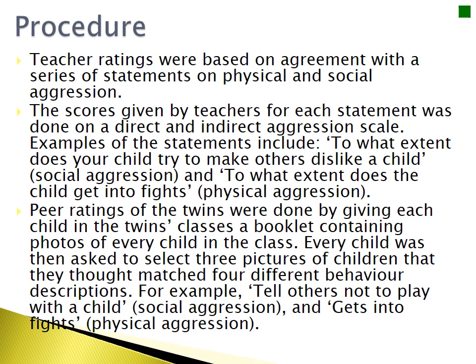Peer ratings of the twins were also done by giving each child in the twins' classes a booklet containing photos of every child in the class. Every child was then asked to select three pictures of children that they thought matched four different behaviour descriptions — for example, 'who tells others not to play with a child,' which would be social aggression, and 'who gets into fights,' which is a measure of physical aggression.